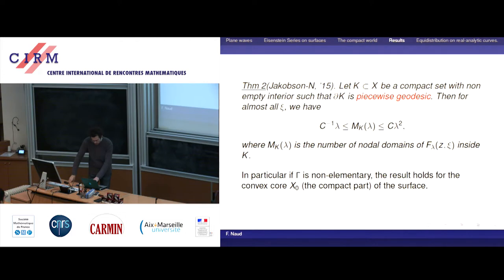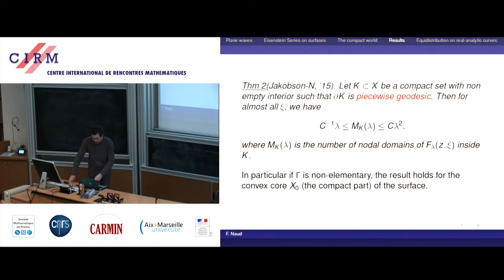A nice application is to count inside the convex core, which is very natural, because the boundary is precisely given by geodesics. We can also count things for the cylinder — just looking at things inside the collar of the closed geodesic — and we have similar results.